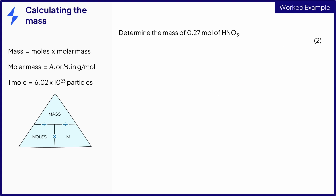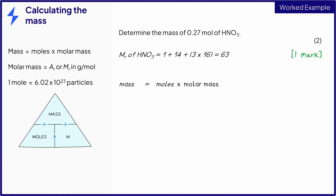In this question, you need to calculate the mass of a substance and you are given the amount of substance in moles. As with the previous question, the first step is to calculate the value of the relative formula mass. Nitric acid contains one atom of hydrogen, one atom of nitrogen and three atoms of oxygen, which gives the value to be 63. Next, write the necessary equation. The number of moles is given in the question and we can use the value of the relative formula mass for the molar mass. Substituting in these values, we can then calculate the final answer.